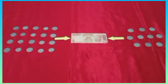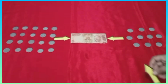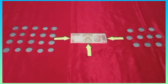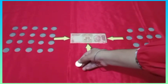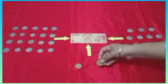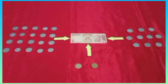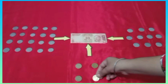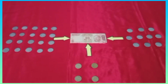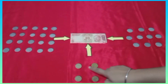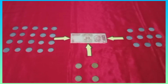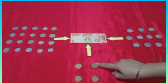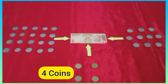Dear students, let us see how many 5 rupee coins make a 20 rupee note. We will count the 5 rupee coins: 5, 5 plus 5 is 10, 10 plus 5 is 15, 15 plus 5 is 20. So we have taken 1, 2, 3, 4 coins. The value of 4 coins of 5 rupee is equal to 1 twenty-rupee note.